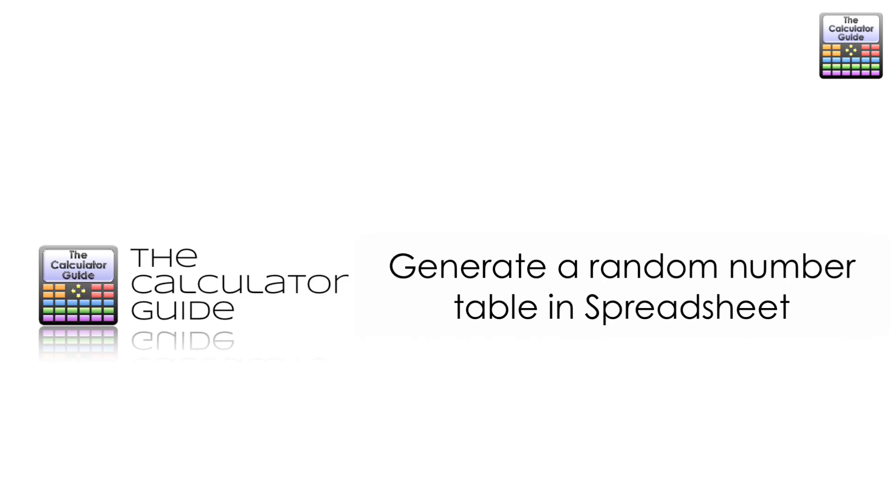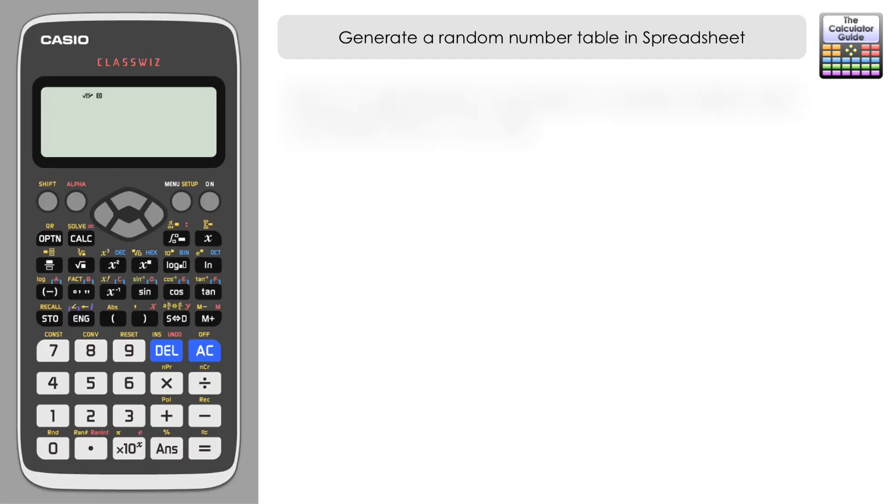Hello and welcome to the calculator guide video on how to generate a random number table in spreadsheet. I'm going to show you how you can generate a random number table at first with numbers from 1 to 100 using spreadsheet mode on the Casio ClassWiz.